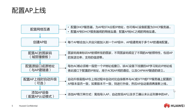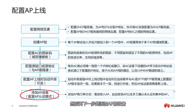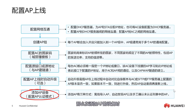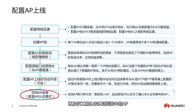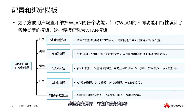The next step is to configure automatic upgrades when APs go online, which is an optional configuration. Then the next step is to add AP devices. There are three ways to add AP devices: offline import of APs, automatic discovery of APs, and manual confirmation of APs from the unauthenticated list. In our experiments, we will show you how to add APs.